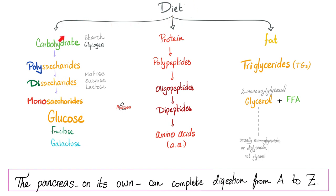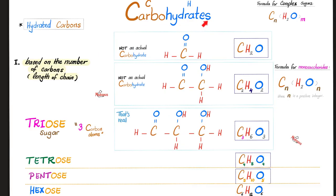Recall that your diet is made of carbohydrates, proteins, and fat. The big carbs are called polysaccharides. When you break them down, you have disaccharides. A disaccharide is made of two monosaccharides. Why do we call them carbohydrates? Because they are hydrated carbons. You have the carbon atoms and the hydrogen atoms. If that carbohydrate has three carbon atoms, we call it triose. Four carbons? Tetrose. Five? Pentose. And six is hexose.